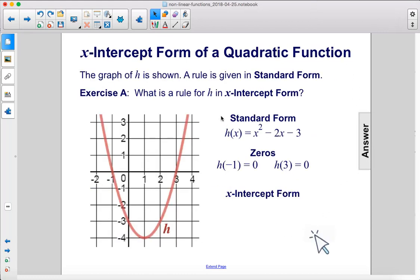The graph of h is shown. A rule is given in standard form. Exercise A: What is a rule for h in x-intercept form? We have our standard form here, x squared minus 2x minus 3, and we know that our zeros are at negative 1 and 3, so therefore we can write it as x plus 1 times x minus 3 in x-intercept form. Because we have negative 1 here so we put a positive 1 there, and we have a 3 here so we put a negative 3 there.